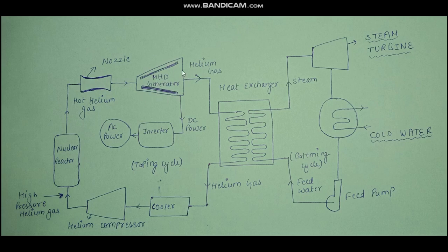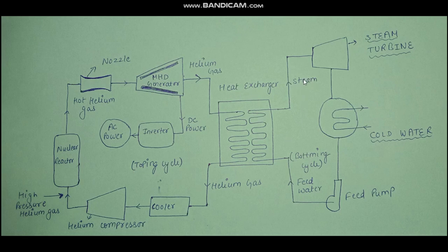Some part of the internal energy of this gas is directly converted into DC power. In the next step, the gas is passed through a heat exchanger — which we call the steam generator. The gas passes through here and converts feed water into steam.